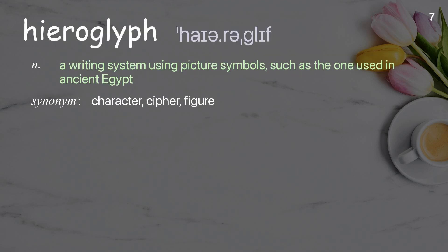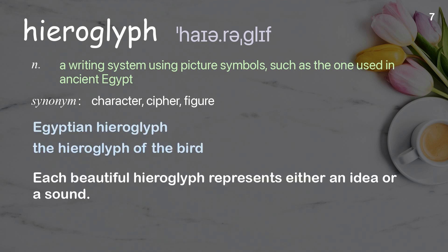Hieroglyph: A writing system using picture symbols, such as the one used in ancient Egypt. Examples: Egyptian hieroglyph. The hieroglyph of the bird. Each beautiful hieroglyph represents either an idea or a sound.